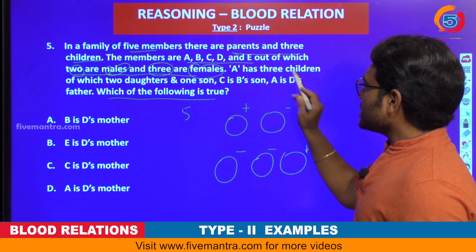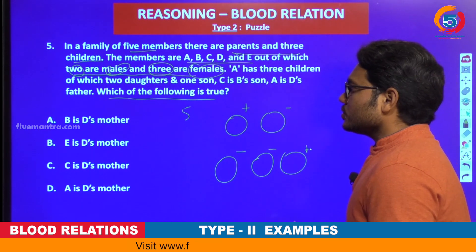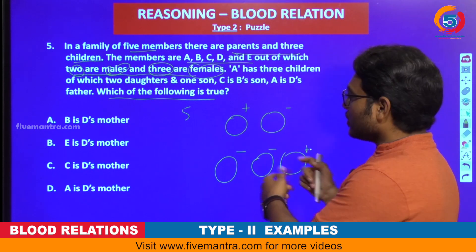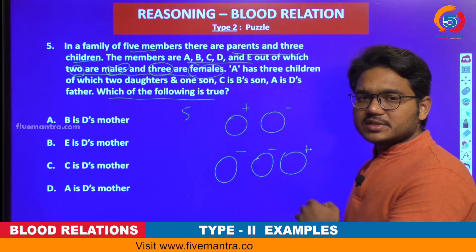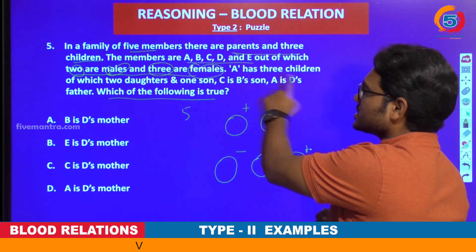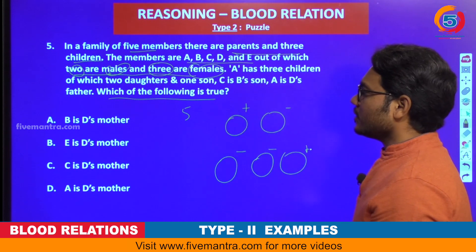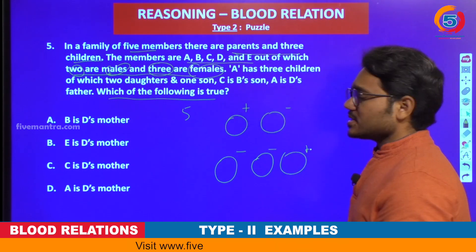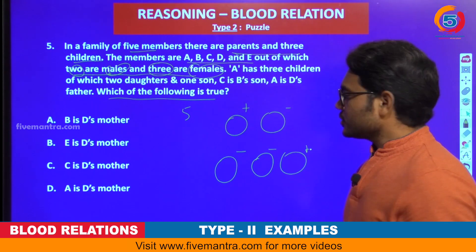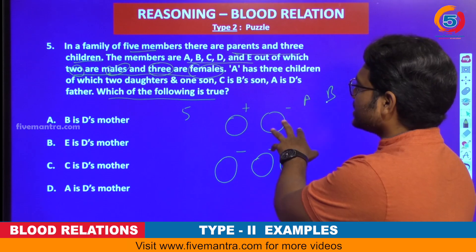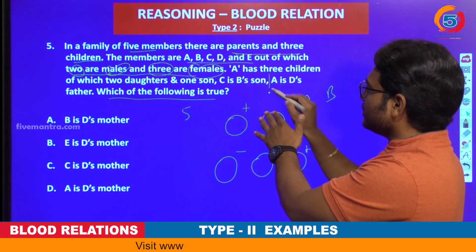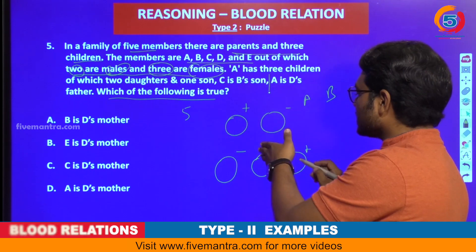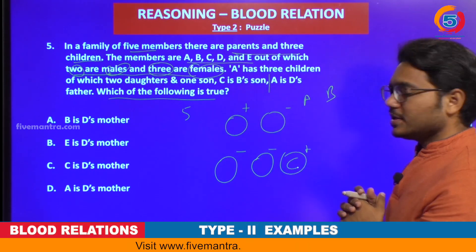Try to understand the further statements. A has 3 children of which 2 are daughters. So this tells us that one of these 2 parents is A. We cannot identify whether it is father or mother yet, but A is a parent. A has 3 children: 2 daughters and 1 son, which we already observed. Then, C is B's son. So obviously A and B are parents, but we do not know the gender of A and B at this point. C is a son, so we can place him as the male child.